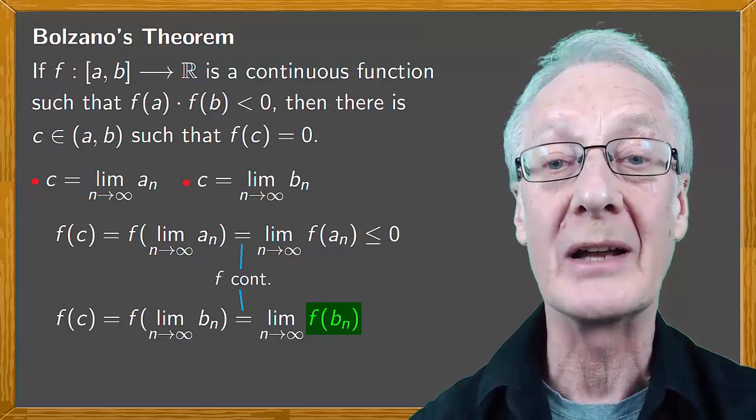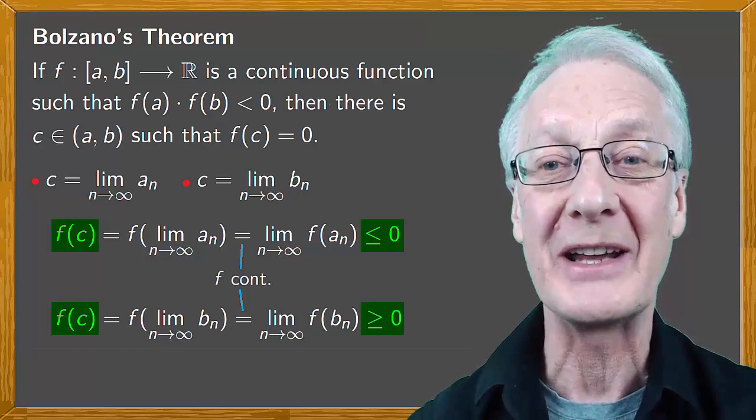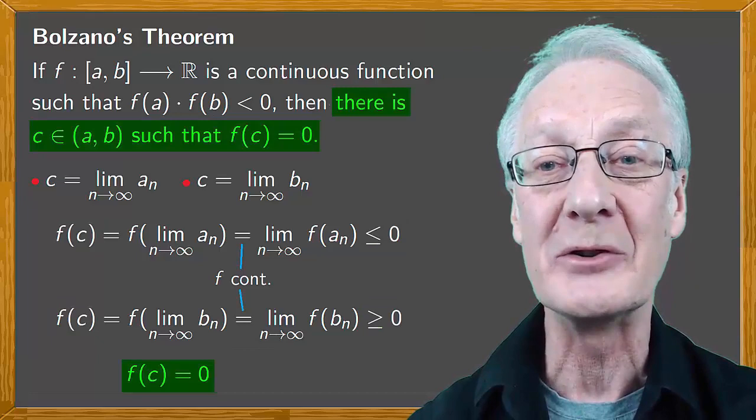Now if f(c) is less than or equal to 0 and greater than or equal to 0, then necessarily f(c) must equal 0. We found the c inside the interval whose image is 0 and have proved Bolzano's theorem.